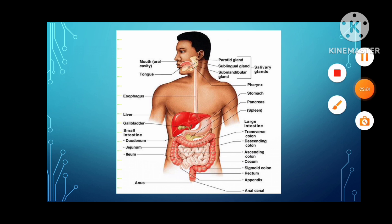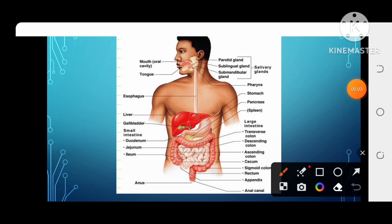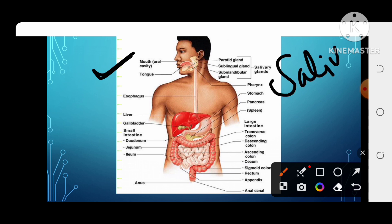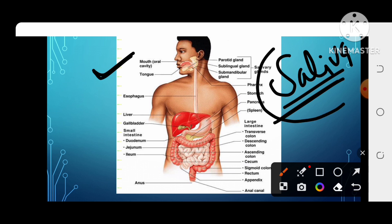We know that the first thing is the mouth, where food enters. In the mouth we have teeth, tongue, and a liquid called saliva. So these three things — teeth, tongue, and saliva — are present in our mouth.